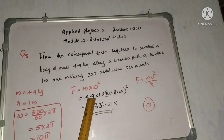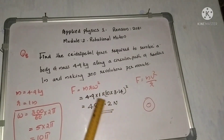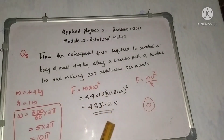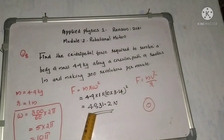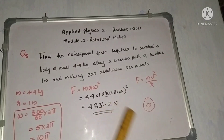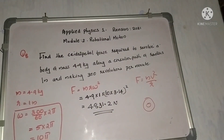Substituting F = 4.9 × 1 × (10π)² into the formula. The calculation gives 4831.2 Newton.